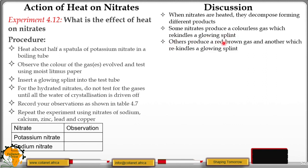Others produce a red-brown gas — that is nitrogen dioxide gas, which is a red-brown gas — and also oxygen gas, which rekindles a glowing splint.